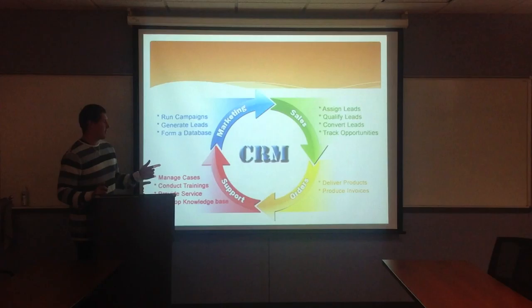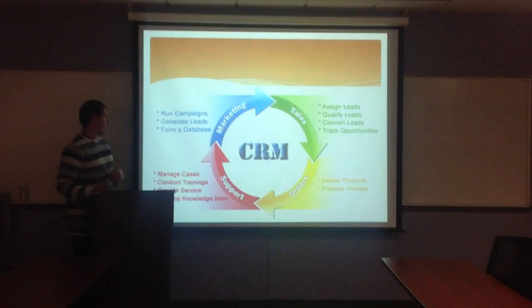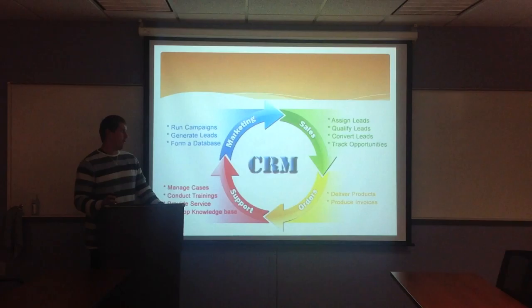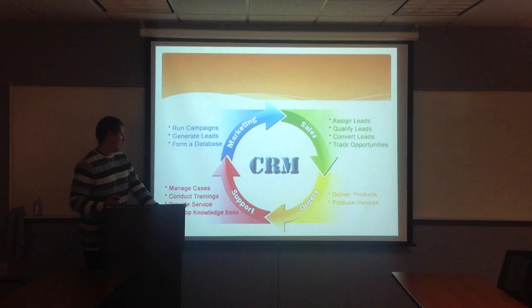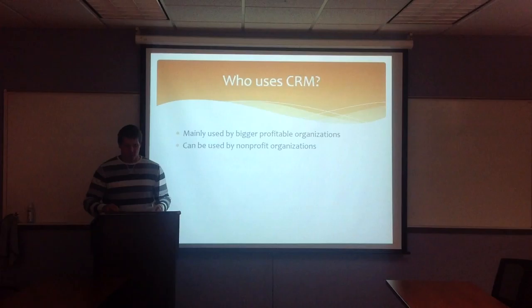This diagram here shows the three parts of CRM: there's marketing, sales, orders, and support. Marketing runs campaigns, generates leads, and informs the database. Sales assigns leads, qualifies leads, converts leads, and tracks opportunities. Orders deliver products and produce invoices. Support manages cases, conducts training, provides service, and develops a knowledge base.